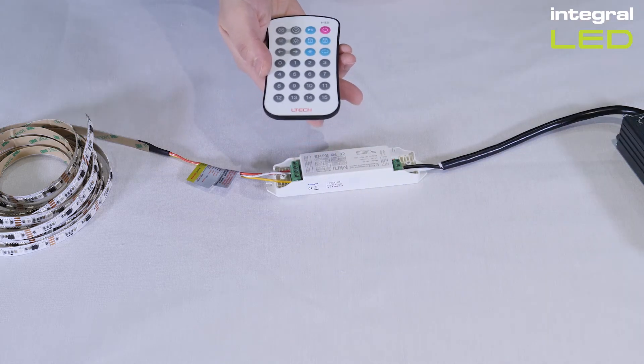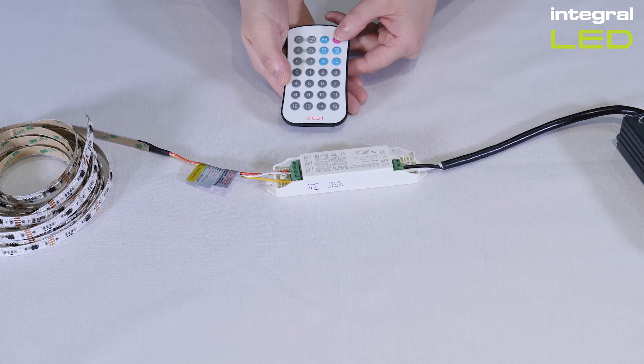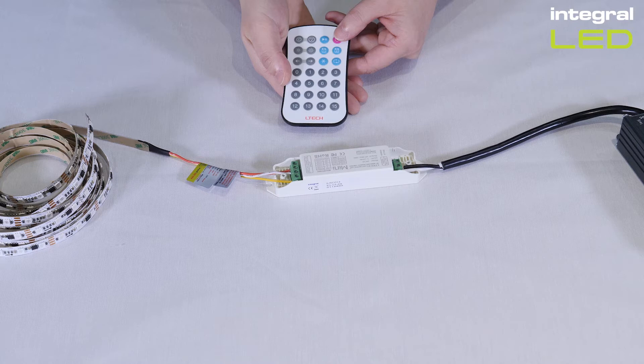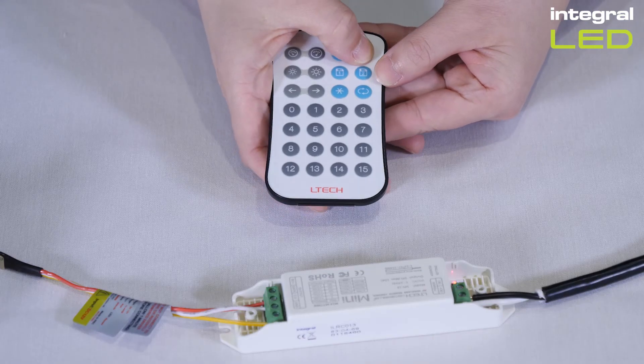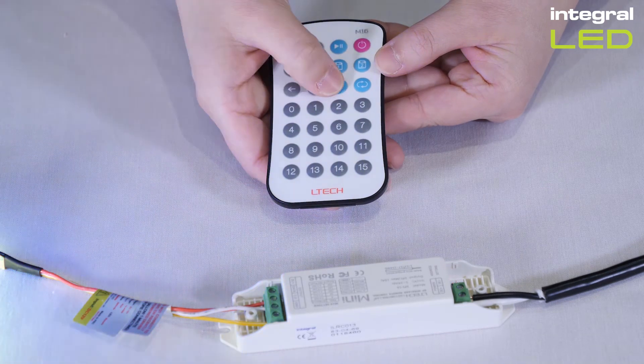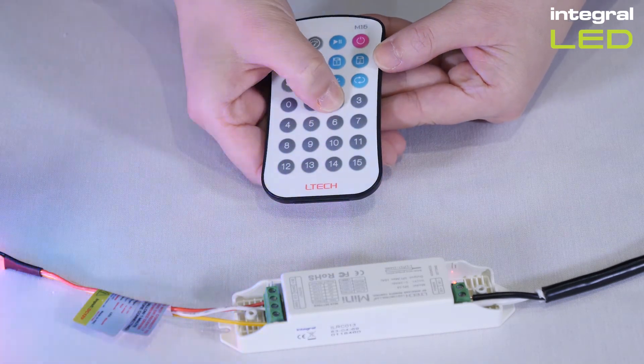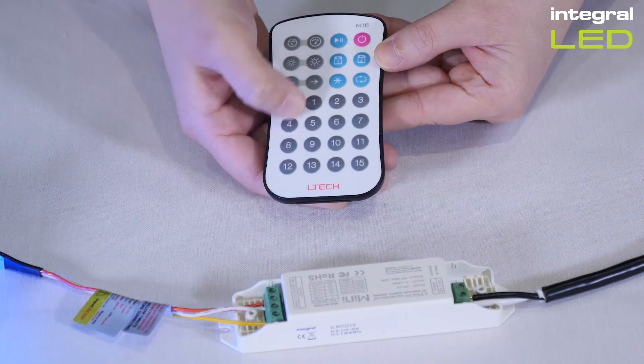Check the number on the IC chips on your strip. The integral LED digital pixel RGB strip contains WS2811 IC chips. To pair the receiver to the strip, turn the strip on using the remote, then press star, two, eight, one, one, star.